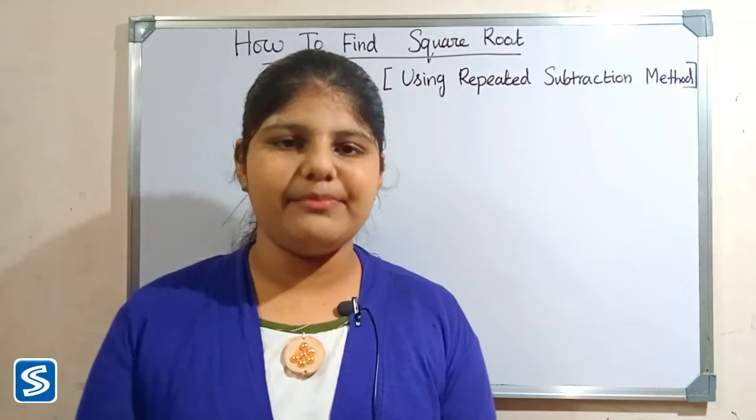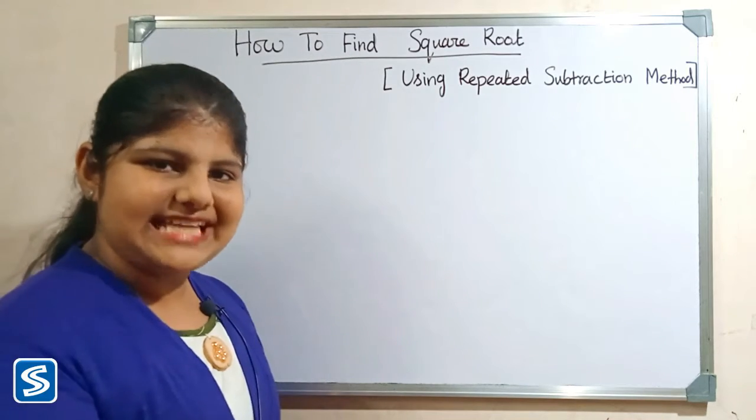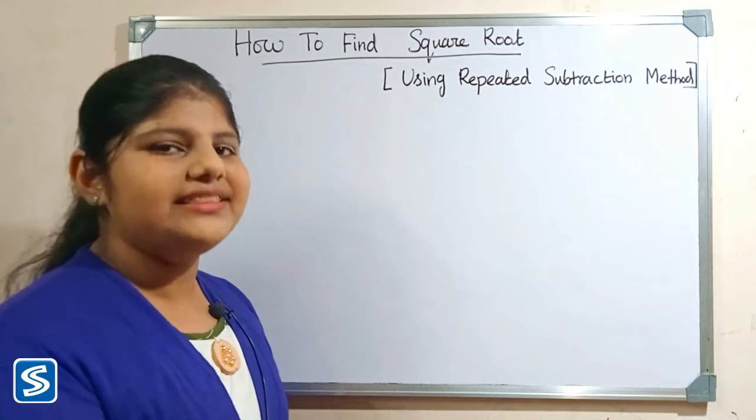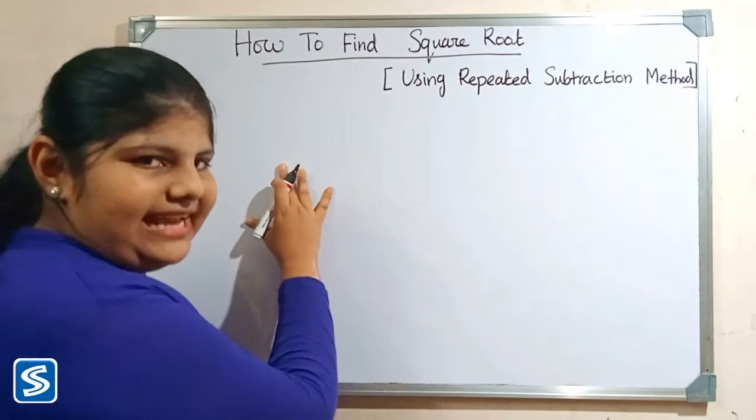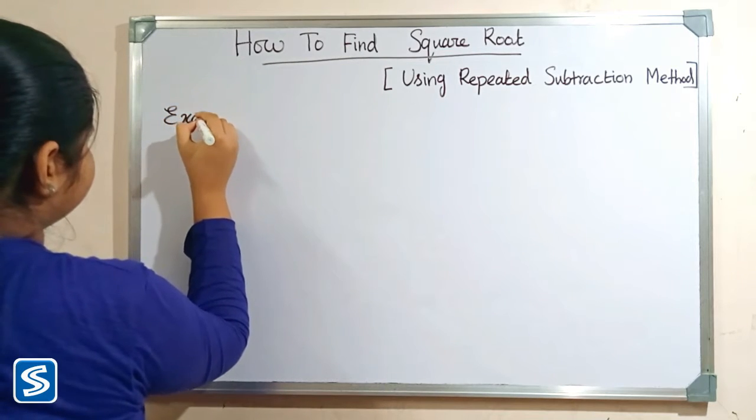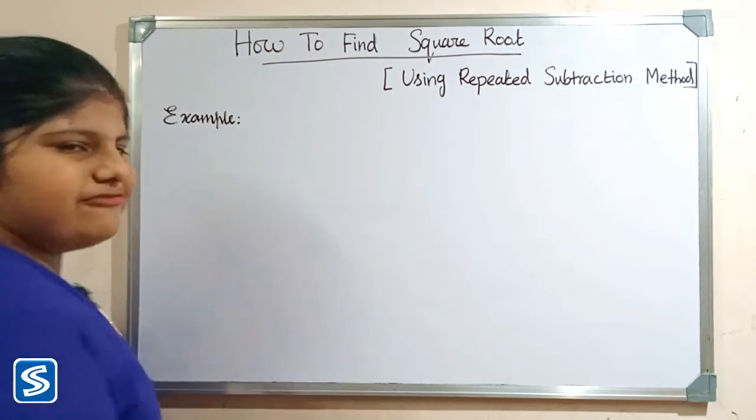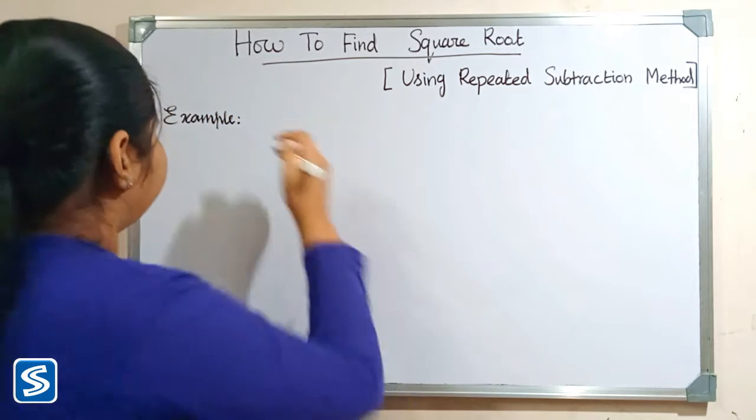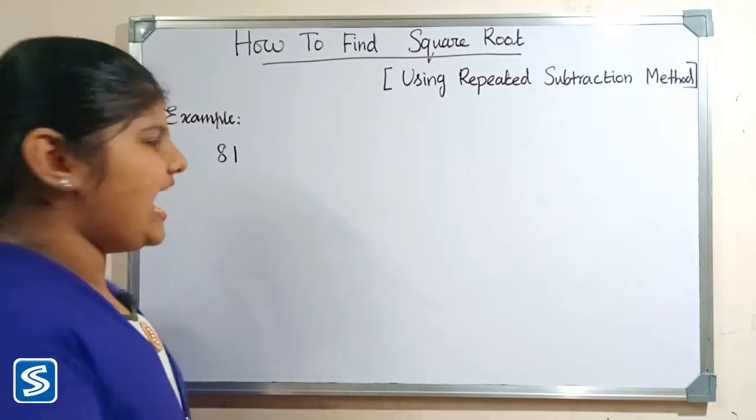The consecutive odd numbers are 1, 3, 5, 7, 9, 11, 13, 15, and so on. Now we will take an example. Let's find the square root of 81.